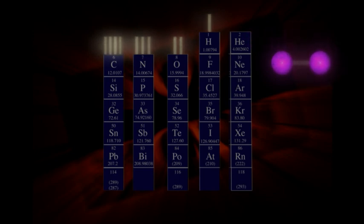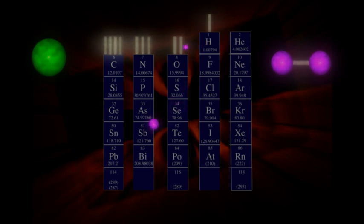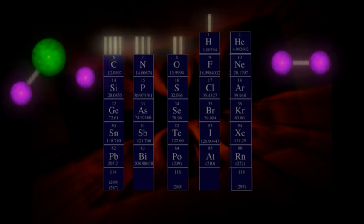Another example is water. We can see that oxygen wants to make two bonds because it is in the second column from the right. So it can get together with two hydrogen atoms, which each want to make one bond, and all three atoms are happy.